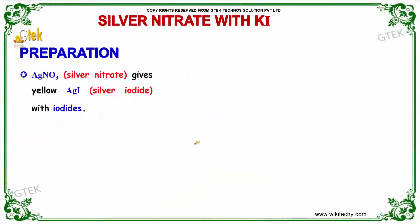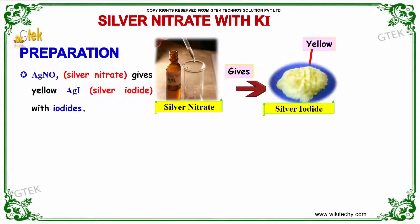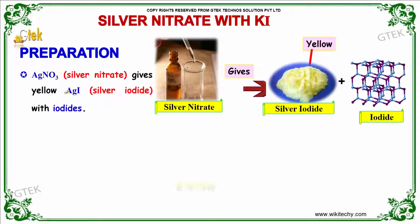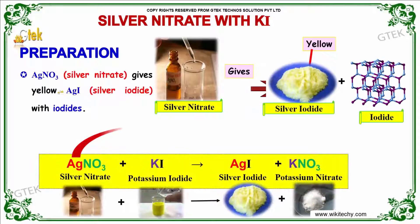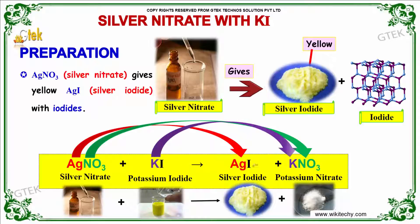With iodides, silver nitrate gives a yellow precipitate of silver iodide. Silver nitrate with potassium iodide gives silver iodide and potassium nitrate.